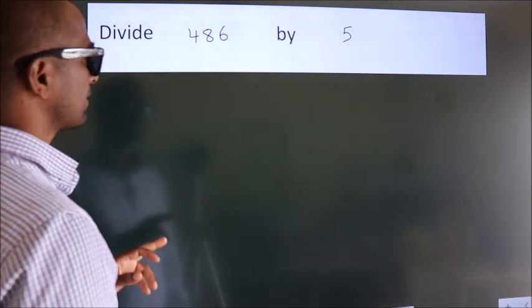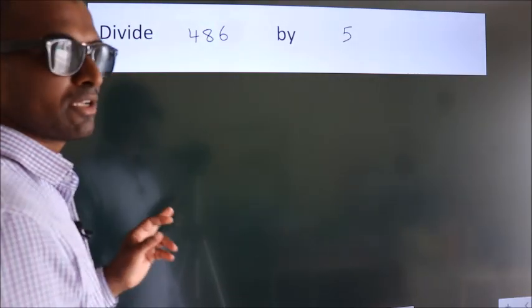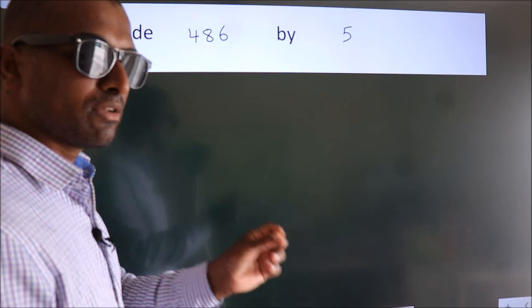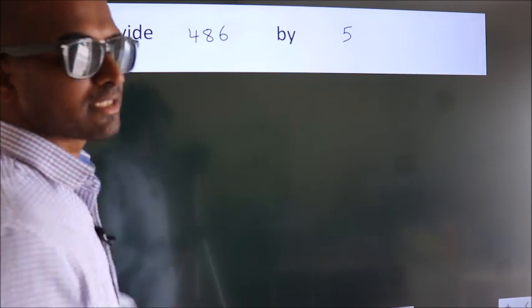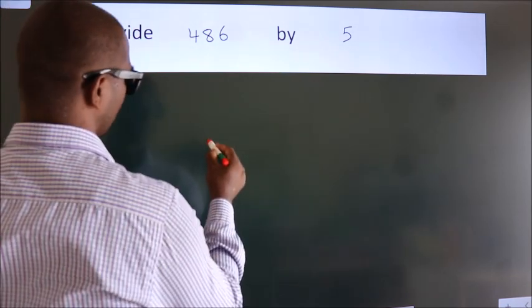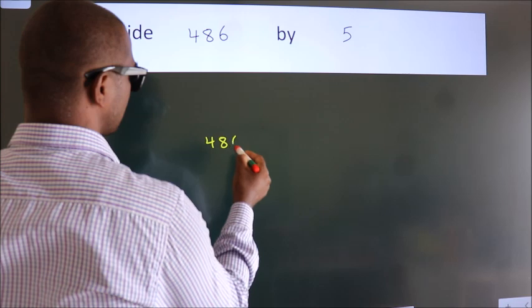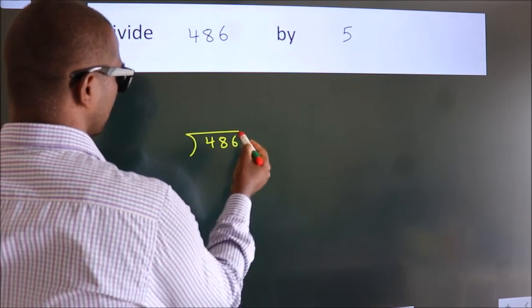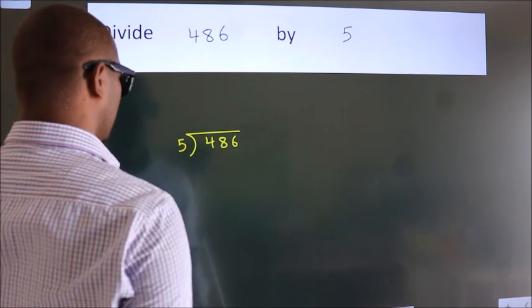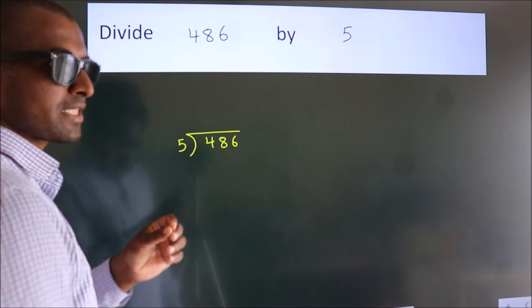Divide 486 by 5. To do this division, we should frame it in this way. 486 here, 5 here. This is your step 1.